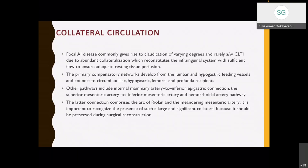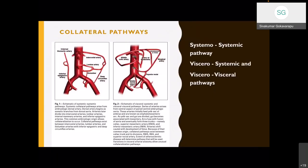In one third of patients with aortic occlusion, renal artery thrombosis developed over the next 5 to 10 years. Because of focal aortoiliac disease, patients present with only claudication due to abundant collateralization which reconstitutes the infrainguinal system with sufficient flow to ensure adequate resting tissue perfusion. The primary compensatory networks include lumbar, epigastric, iliolumbar vessels connecting to circumflex iliac, hypogastric, femoral, and profunda recipients. Other pathways include the internal mammary-inferior epigastric pathway, and also visceral pathways include the superior mesenteric and inferior mesenteric pathway.